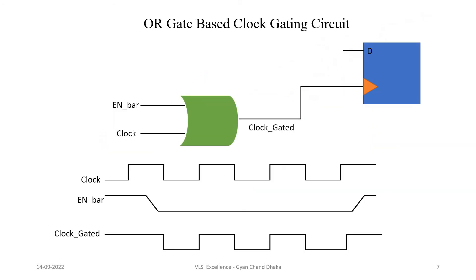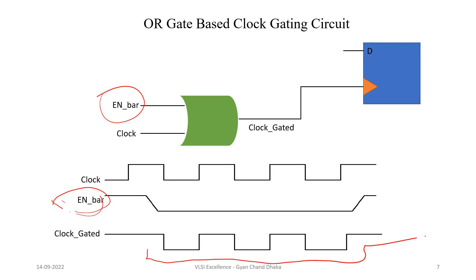Now let's see another clock gating circuit which is based on an OR gate. Here we have one OR gate in the clock path and one enable-bar signal — enable here is basically an active low signal. Whenever enable-bar is low, the OR gate will pass the clock signal; otherwise, the OR gate output will always be high. Whenever the enable signal toggles when the clock signal is high, we get a perfect clock signal at the output. But what happens if the enable signal toggles when the clock signal is low? It will create glitches in the output gated clock.